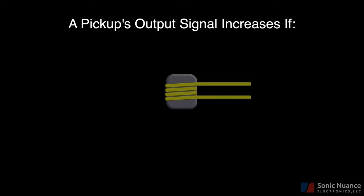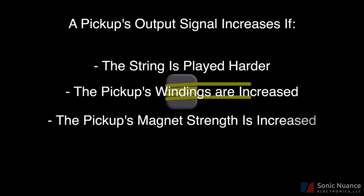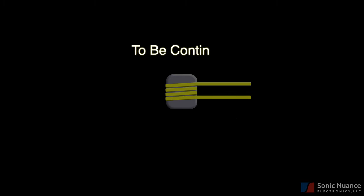In summary, the pickup's output signal increases if the string is played harder, more coil is added, the magnet is strengthened, or the string is brought closer to the pickup. It should be noted that each one of these affects the sound or the tone coming out of the instrument.